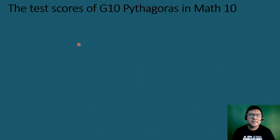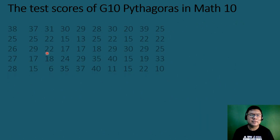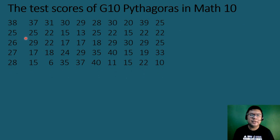Let's solve this example. These are the test scores of G-10 Pythagoras in a math exam. So all in all, we have 50 students who took the exam.